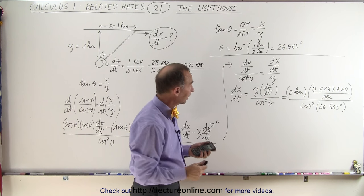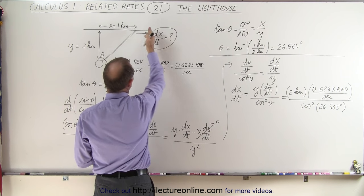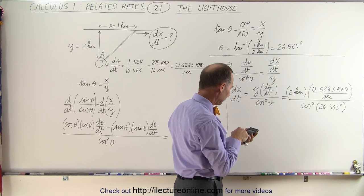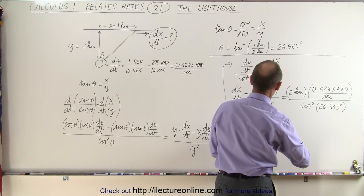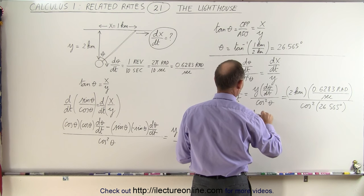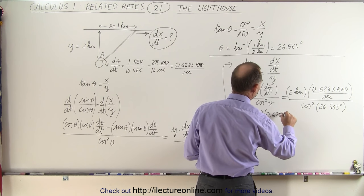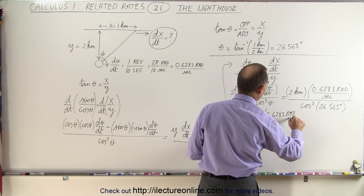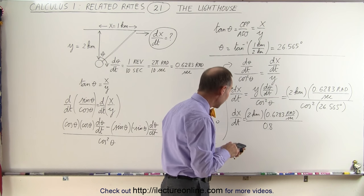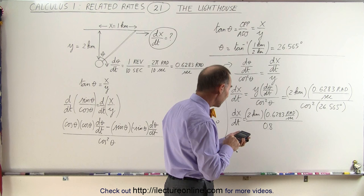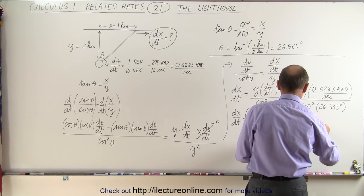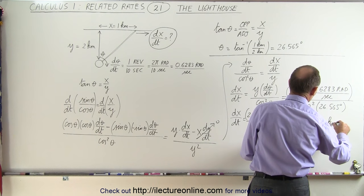All right, I'm now ready to calculate the rate of change of the beam against the shoreline, dx/dt. Since I have the angle, I'm going to take the cosine of that squared—that's 0.8. So dx/dt = 2 km × 0.6283 rad/s divided by 0.8. We bring that to the numerator: 2 × 0.6283 / 0.8 equals 1.57 kilometers per second.